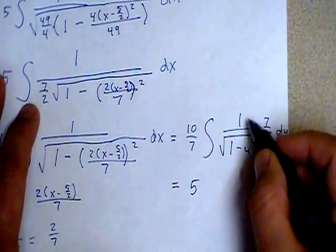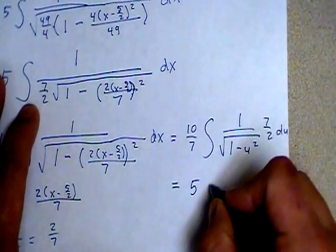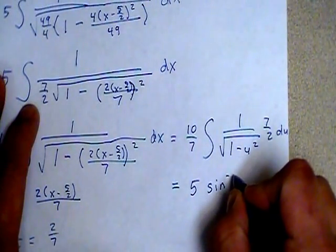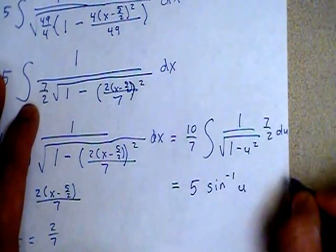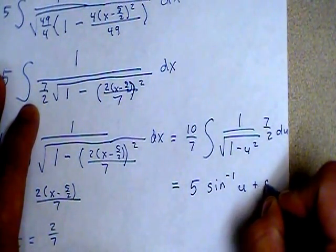And then the integral of 1 over the square root of 1 minus u squared is going to be the inverse sine of u plus a constant c.